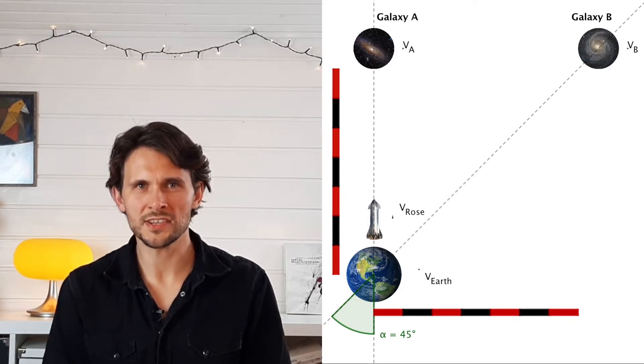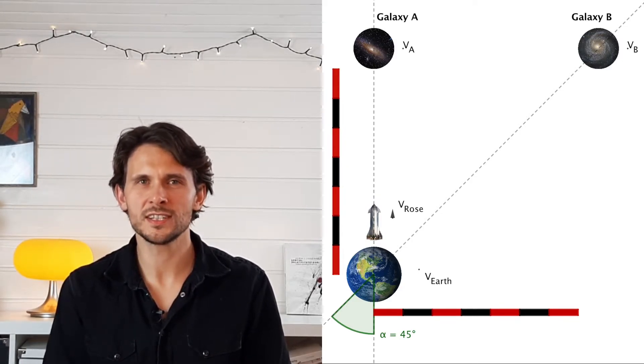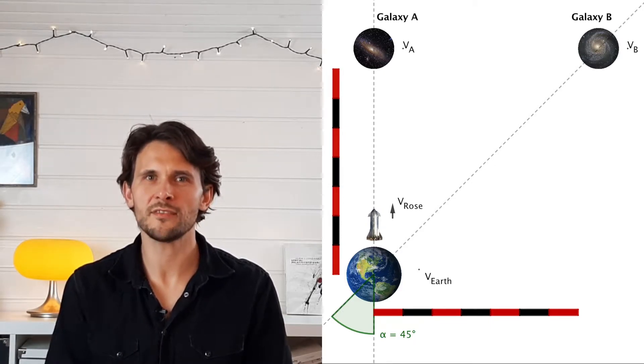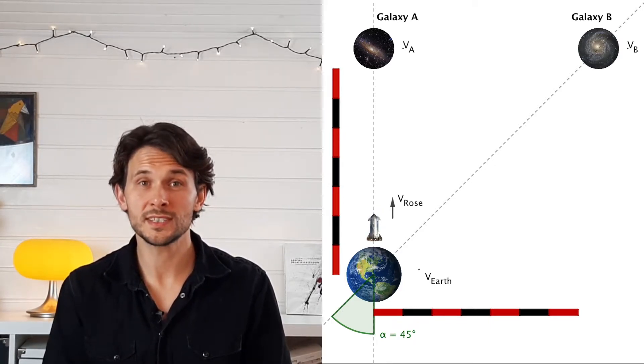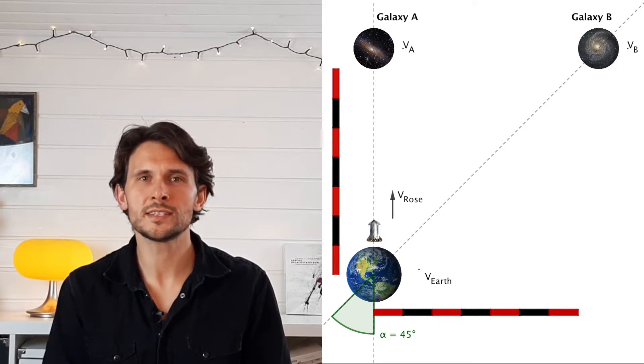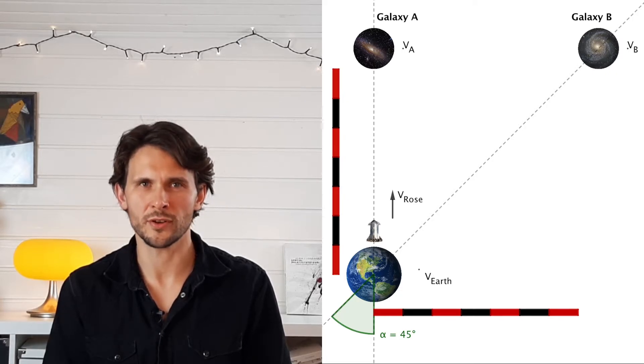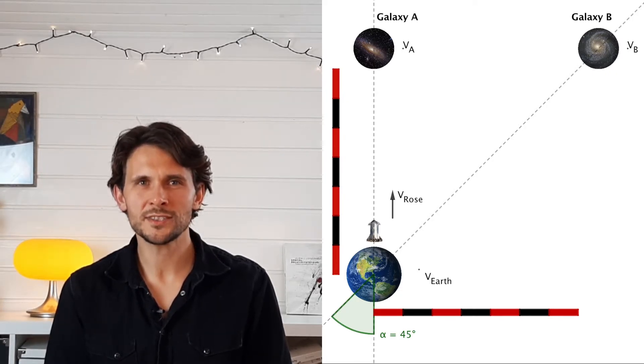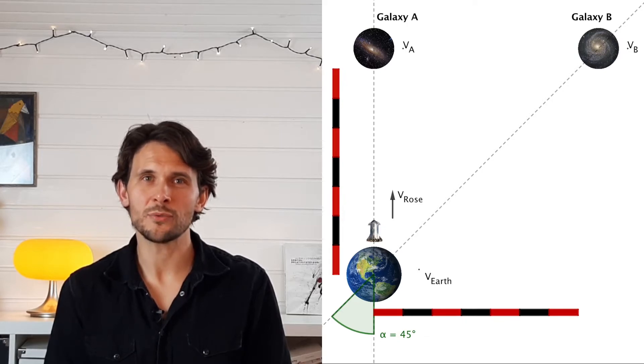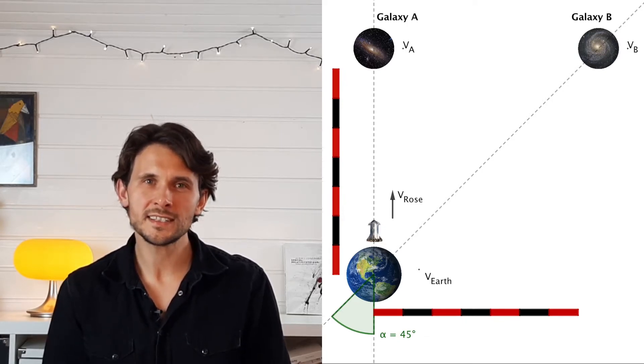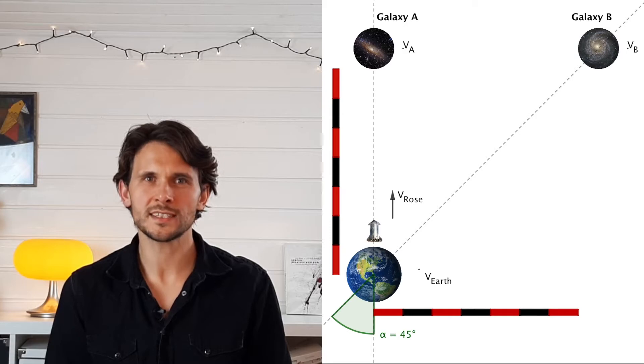Rose jumps in her starship and shoots off with a velocity of 86.6 percent of the speed of light. This gives her a Lorentz factor of 2 and due to relativistic length contraction her ship shrinks to half of its original length seen from the perspective of Earth. Just after departure, Rose changes her mind about the choice of galaxy and she decides to turn the ship toward galaxy B instead.